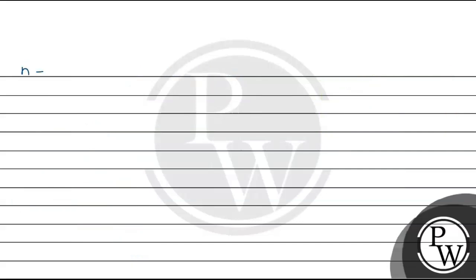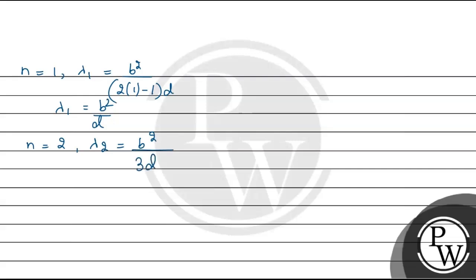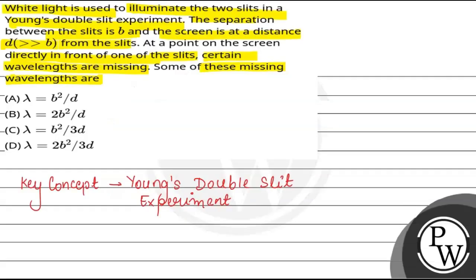So अगर हम N की value 1 डालते हैं तो lambda₁ की value आएगी b² / d. अगर हम N की value 2 डालते हैं तो lambda₂ की value क्या आएगी? b² / ((2×2−1) × d) = b² / 3d. ऐसे ही अगर हम N की value 3 डालते हैं तो lambda₃ की value आएगी b² / ((2×3−1) × d) = b² / 5d. 5d कैसे आया? 2 into 3 = 6, 6 minus 1 = 5, तो 5 into d. So यहाँ पर यह सब wavelengths missing होगी.